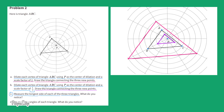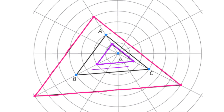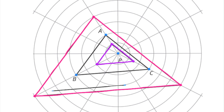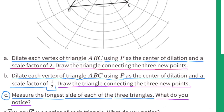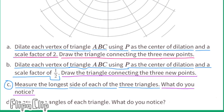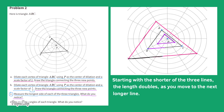Part C: Measure the longest side of each of the three triangles. I'm going to drop the length down and compare. I notice that the length doubles as you move to the next longer line. Starting with the shorter of the three lines, the length doubles as you move to the next longer line.